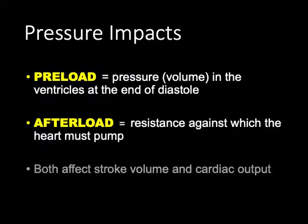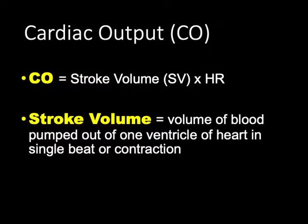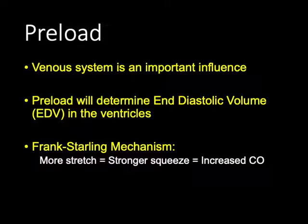Both preload and afterload affect stroke volume and cardiac output. Cardiac output equals stroke volume times heart rate. Preload is most influenced by the venous side — blood coming into the heart — and can be directly impacted by fluid boluses, which increase preload. The Frank-Starling mechanism is an important concept here: the volume in the ventricle at the end of diastole is the maximum fluid the heart has to work with when it squeezes.